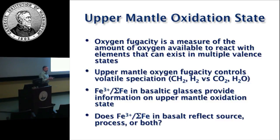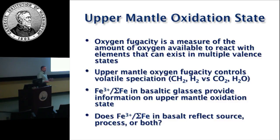You get redox couples between these things as you change the oxidation state. One of the reasons we want to know about upper mantle oxygen fugacity is because it controls the speciation of volatiles. If you have very low oxygen fugacity — very little oxygen around — carbon and hydrogen are in reduced form, so you'd have methane and H2. Whereas under more oxidized conditions, they'd be present as CO2 and H2O. If hydrogen and carbon are present as methane and hydrogen, it doesn't flux melting of the peridotite, whereas if it's in the more oxidized form of water and CO2, it will flux melting. So it's a pretty important distinction.